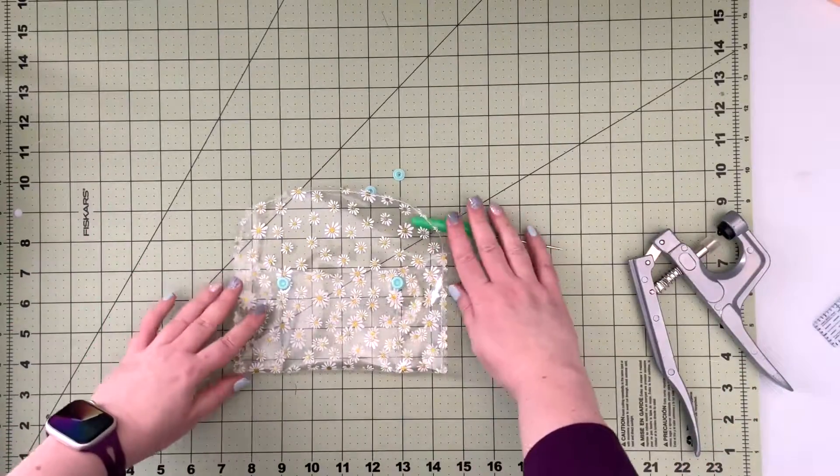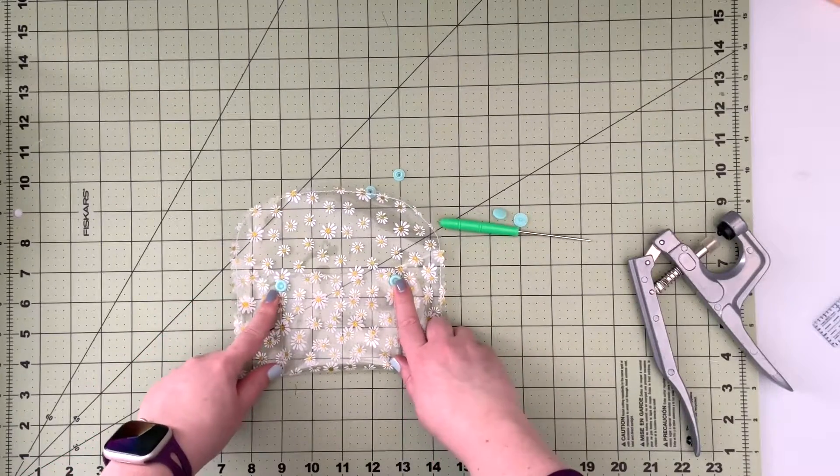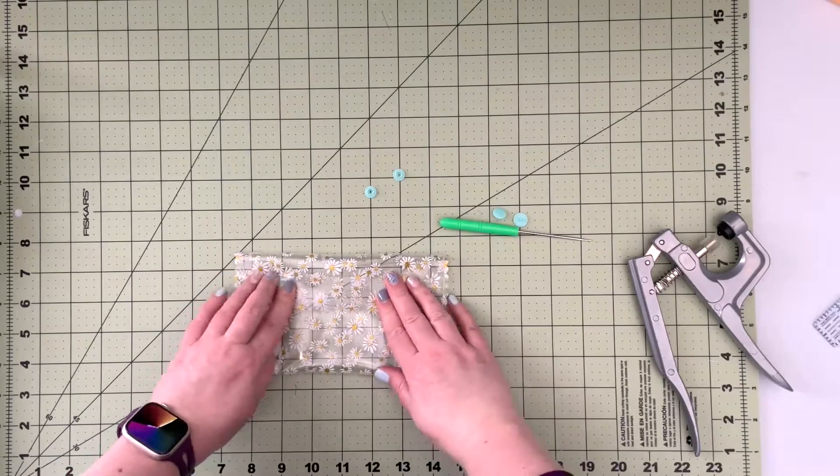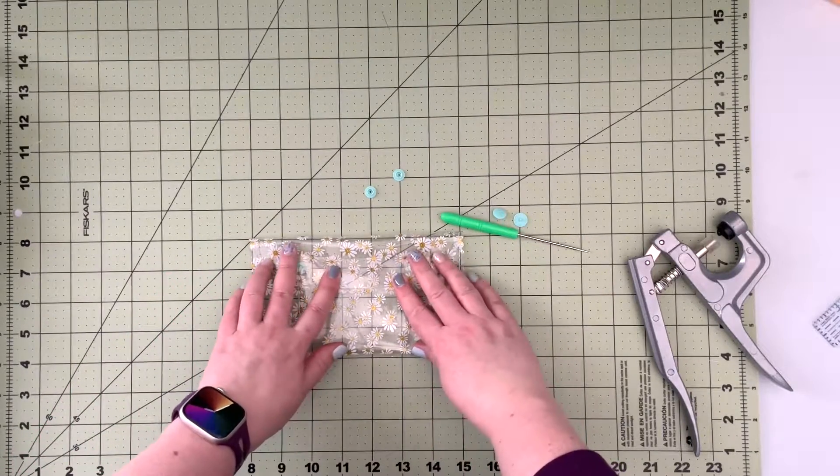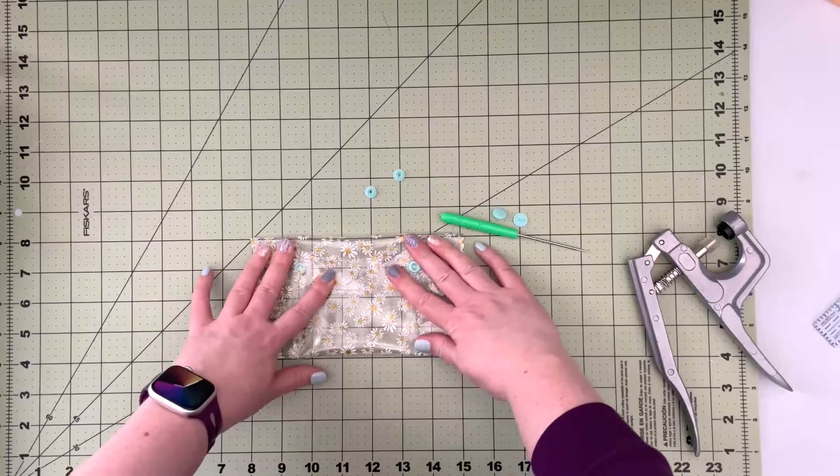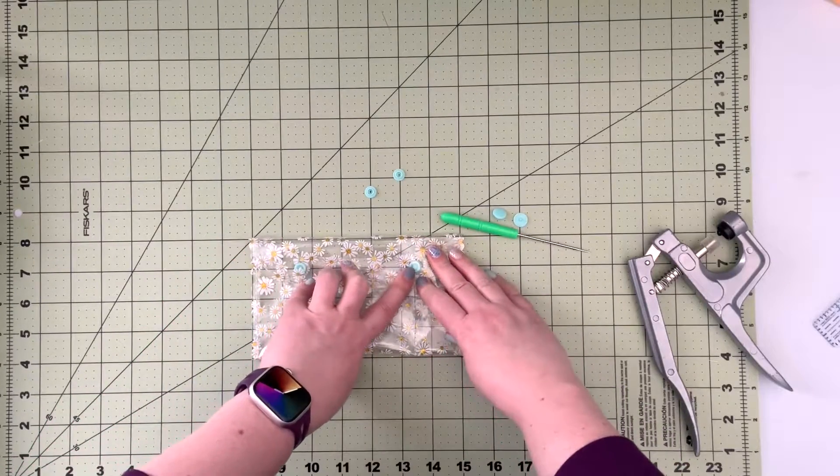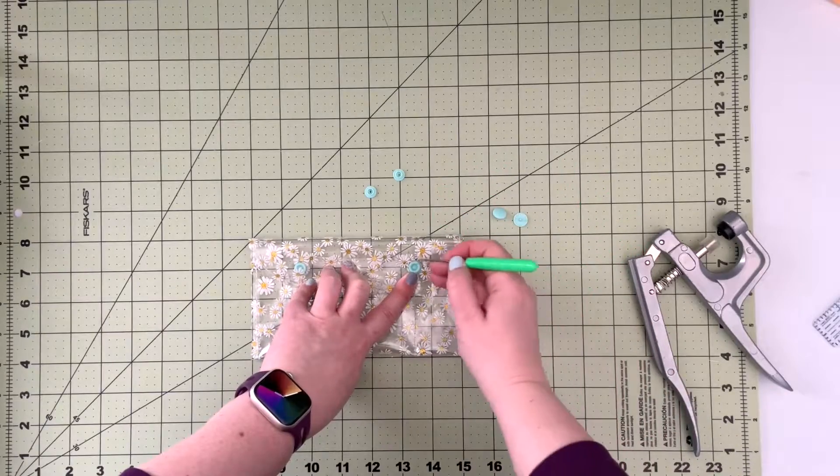Now that we have the female parts of the snaps installed we're gonna fold our flap, make sure everything is nice and straight, and install the first male part of the snap.